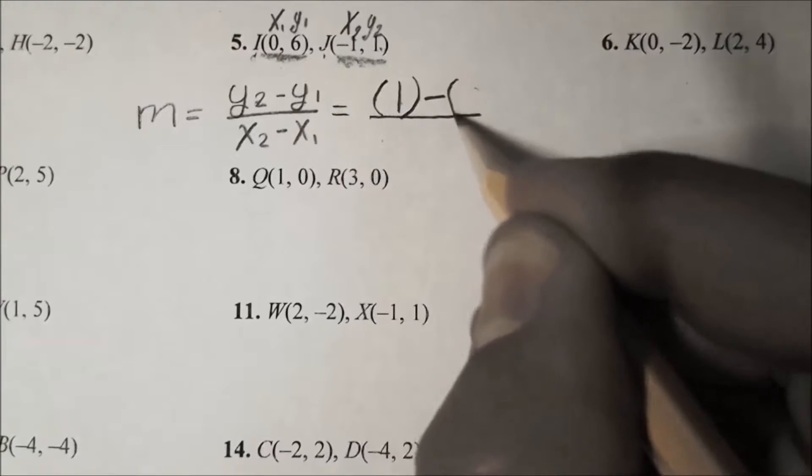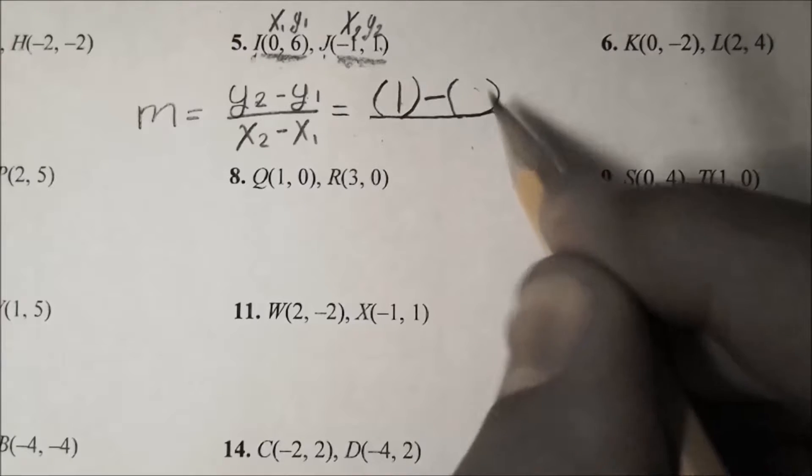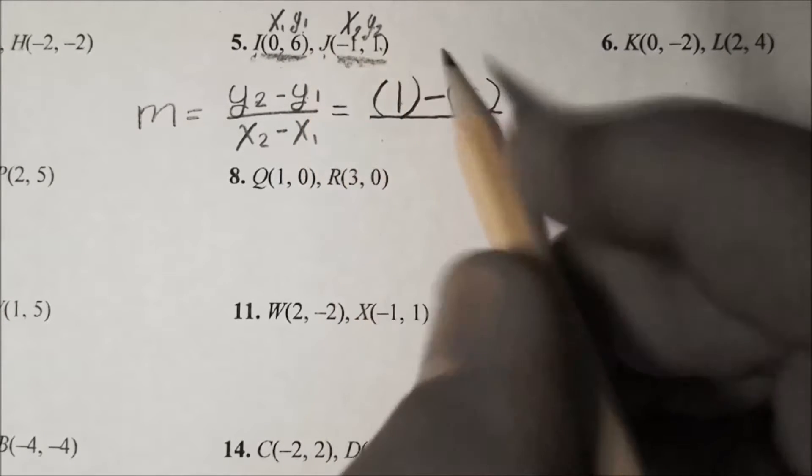We have our one for y₂ right here. Then we're going to subtract that from our y₁, which is 6. Remember that this is y₂, then our other set has y₁, so we're going to put that 6 in place of it.